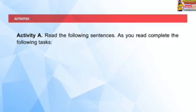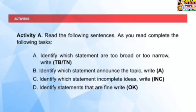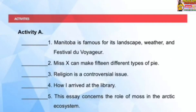Activity A. Read the following sentences. As you read, complete the following tasks: (A) Identify which statements are too broad or too narrow — write TB or TN. (B) Identify which statements announce the topic — write A. (C) Identify which statements have incomplete ideas — write INC. (D) Identify statements that are fine — write OK. Statements: 1. Manitoba is famous for its landscape, weather, and Festival du Voyageur. 2. Miss Y can make 15 different types of pie. 3. Religion is a controversial issue. 4. How I arrived at the library. 5. This essay concerns the role of moss in the arctic ecosystem. If you got the same answers, great job!